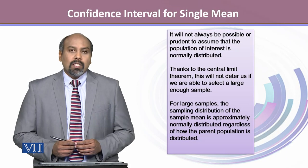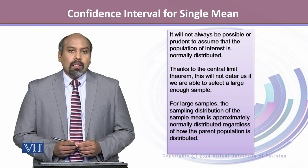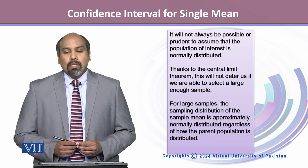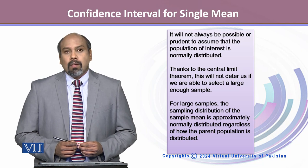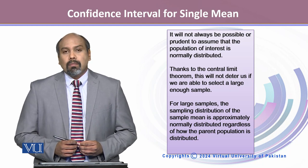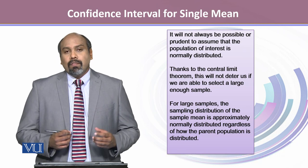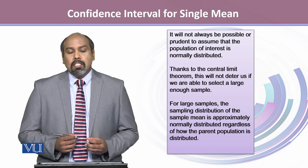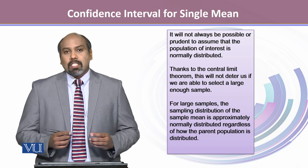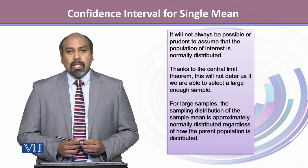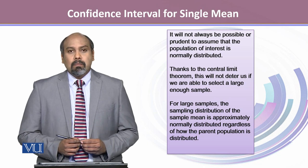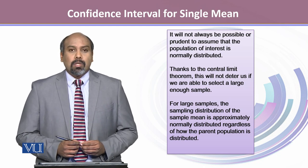It's not always possible to assume the population follows a normal distribution. Thanks to the central limit theorem, if we have a large enough sample size, the distribution of X̄ follows the normal distribution regardless of the population's distribution.